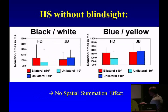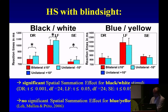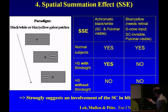The conclusion is that normal subjects respond to both. Hemispherectomy subjects with blindsight respond to achromatic but not to blue-yellow. Those without blindsight do not respond to any. This strongly suggests an involvement of the superior colliculus in blindsight.